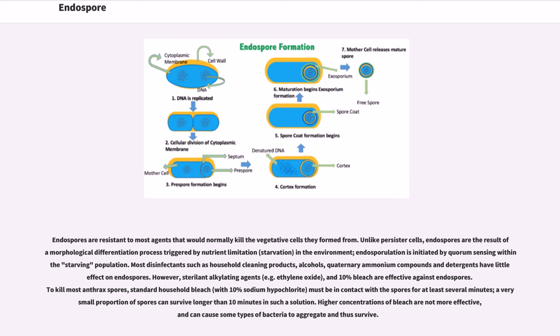Most disinfectants such as household cleaning products, alcohols, quaternary ammonium compounds and detergents have little effect on endospores. However, sterilants and alkylating agents, and 10% bleach are effective against endospores. To kill most anthrax spores, standard household bleach must be in contact with the spores for at least several minutes. A very small proportion of spores can survive longer than 10 minutes in such a solution. Higher concentrations of bleach are not more effective and can cause some types of bacteria to aggregate and thus survive.